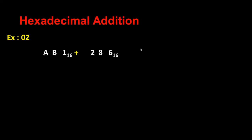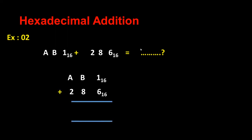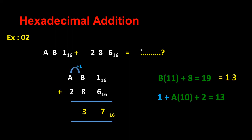Now let's do another exercise: A B 1 plus 2 8 6 6. So 1 plus 6 answer is 7, and B plus 8 answer is 19 — I can't write 19 so the hexadecimal value is 1 3. I write 3 here and pass 1 to the next position. Now I have 1 plus A: A is 10, plus 2 is 13, which will be D.